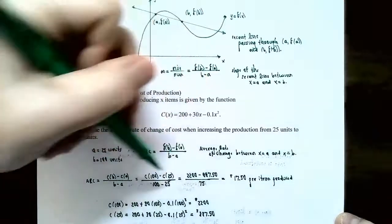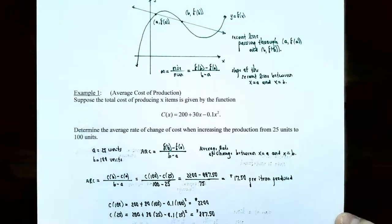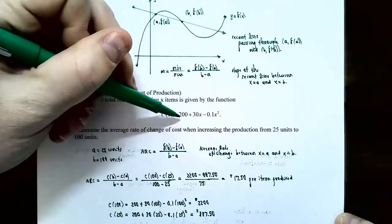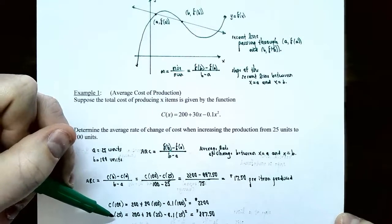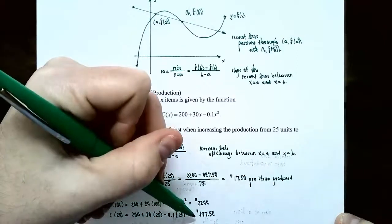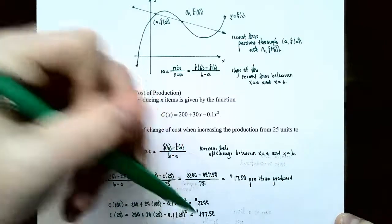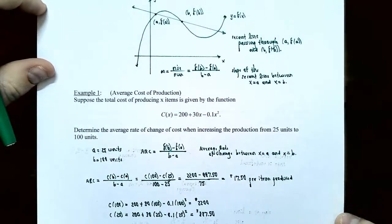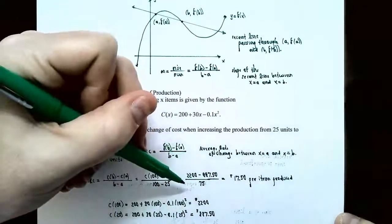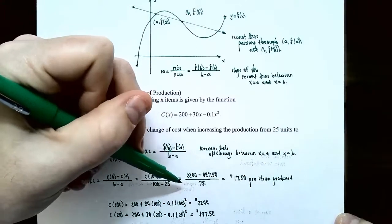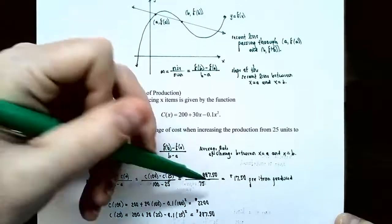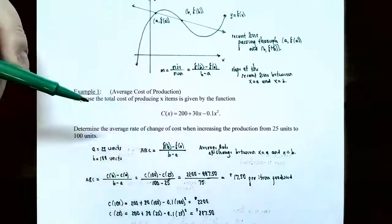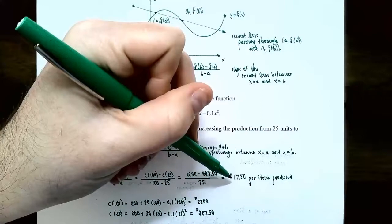Calculating: c of 100 — the cost of producing 100 units — gives $2,200. Plugging 25 into the cost function gives $887.50. So the numerator is 2,200 subtract 887.50. The difference between the units is 75. Dividing these gives the average cost or average rate of change: $17.50.